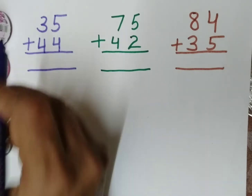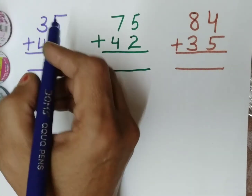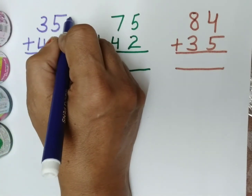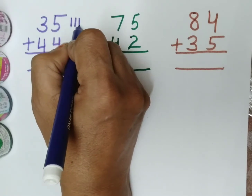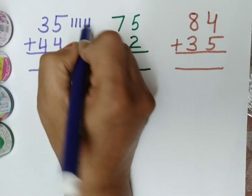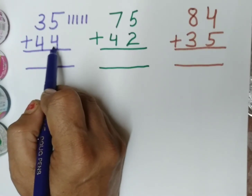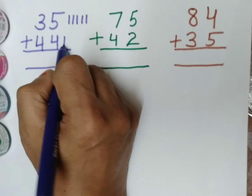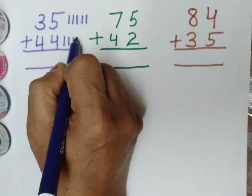Now tell me what is this? Yes, this is 5. So we will put 5 lines: 1, 2, 3, 4 and 5. Now you tell me what is this? Yes, this is 4, correct. So we will put 4 lines: 1, 2, 3, 4.